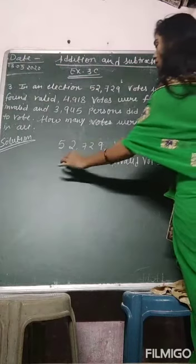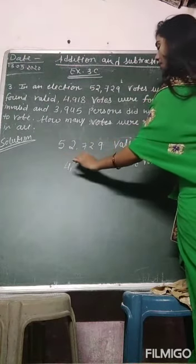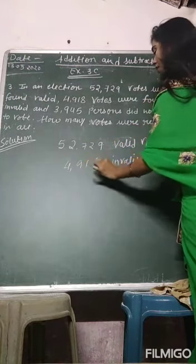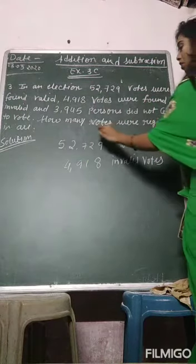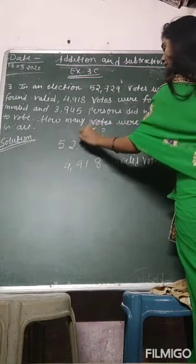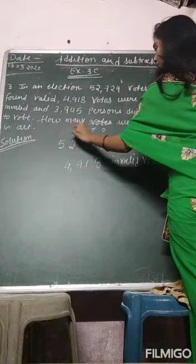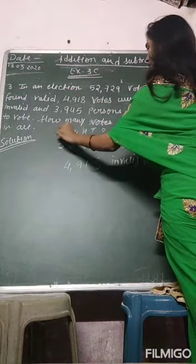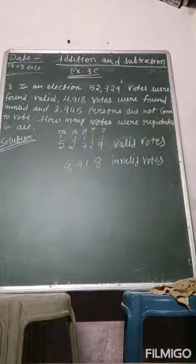4,918. This is ones place, tens place, hundreds place, thousands place, and then ten thousands place.